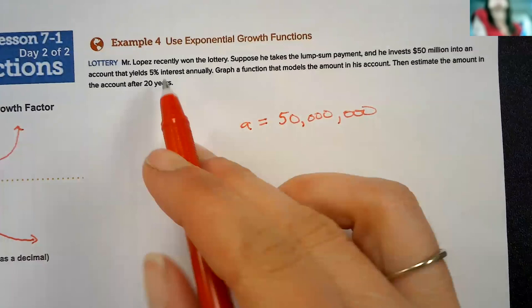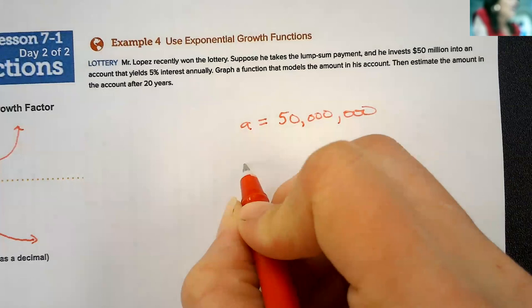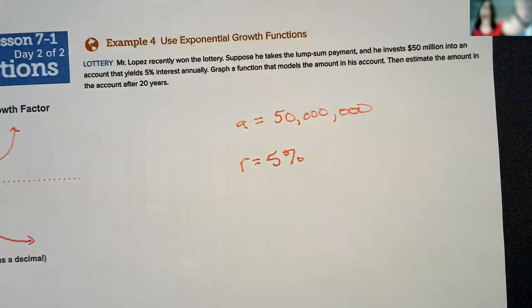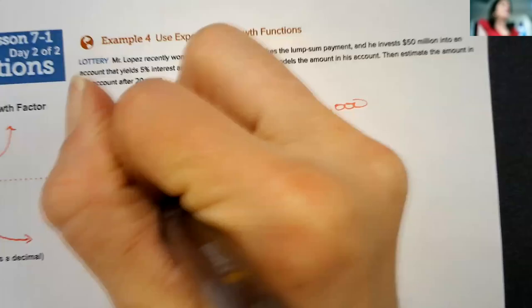He invests $50 million in an account that yields 5% interest annually. So every year, he gets 5%. Now, it says to express that as a decimal. Quick review on changing from decimal to percent.